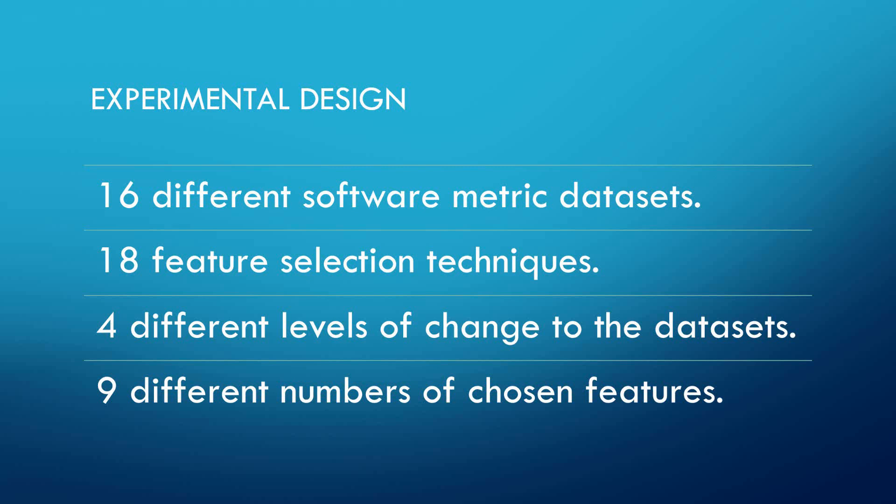For the experimental design, to test the stability of different feature selection techniques under different circumstances, the research team performed a case study on 16 different software metrics datasets using 18 feature selection techniques, for different levels of dataset perturbation and nine different numbers of chosen features. The details of the datasets used and the results will be covered in the following slides.